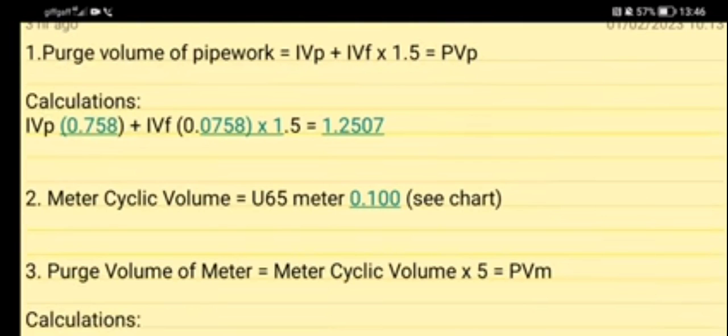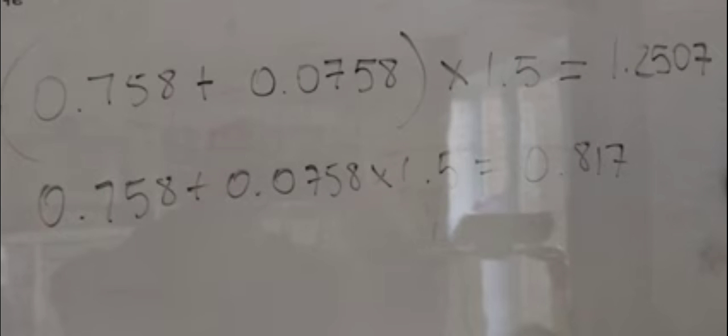So if you do the IVp plus the IVf times 1.5, if you don't hit equals after the IVf, you can end up with the wrong figure. The wrong figure came, then I managed to make another error.